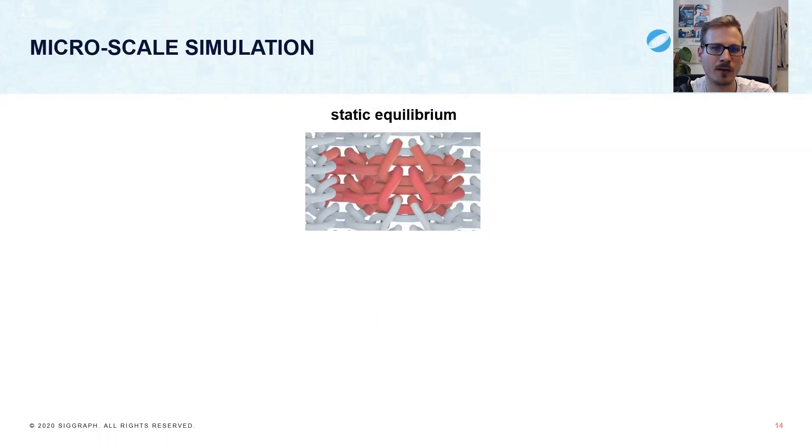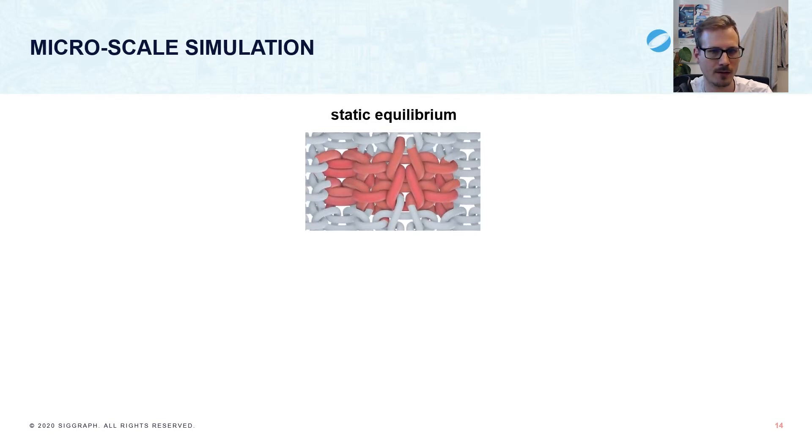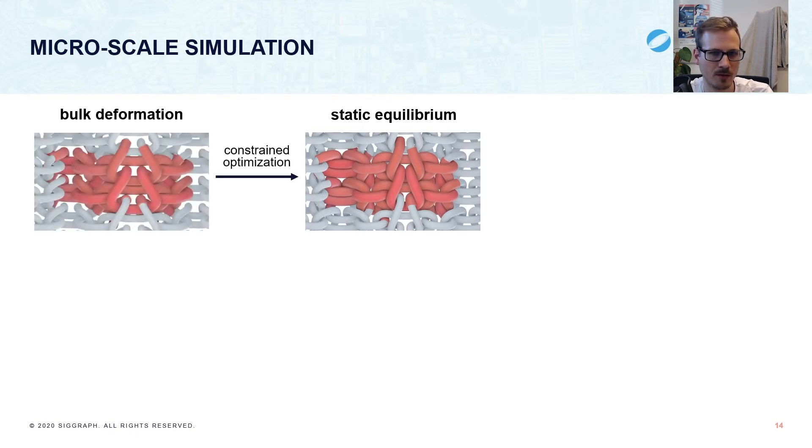For our goal of fitting a purely elastic energy, we're specifically interested in the static equilibrium, that is the state where the yarns are at rest and have adapted to the bulk deformation. In a nutshell, this amounts to constraint Newton-Raphson optimization, subject to the average and periodicity constraints. Starting from the bulk deformation of u tilde 0, and finding the optimal value of u tilde to minimize the total energy.